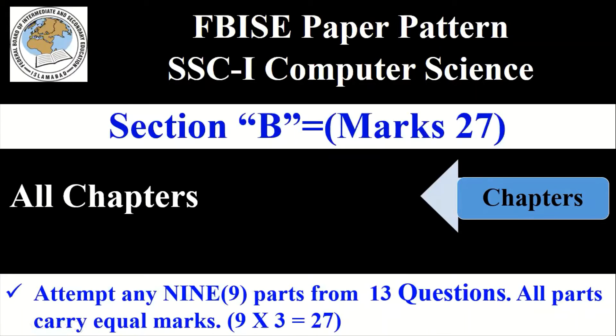For example, each question has 3 marks, and you have to attempt 9 questions — so 9 times 3 equals 27. You will get 27 marks in Section B. So students, you will get 27 marks if you attempt 9 questions, as each question carries 3 marks.